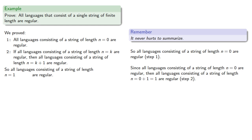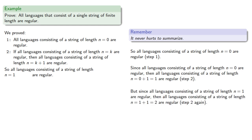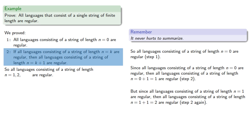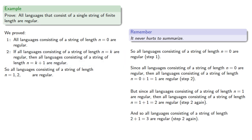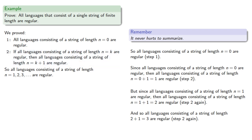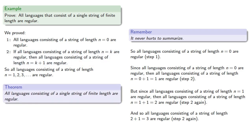Since all languages consisting of a string of length n equals 1 are regular, then all languages consisting of a string of length n equals 1 plus 1 — that is, 2 — are regular. And so all languages consisting of a string of length 2 plus 1 — that is, 3 — are regular, and so on. Consequently, all languages consisting of a single string of finite length are regular.